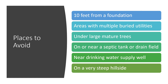Avoid putting a rain garden near a drinking water supply well. If you live in a city hooked up to city water, you don't need to worry about that, but in a rural setting keep those in mind. Lastly, don't put a rain garden in the middle of a steep slope or at the very base of one. There's concern with erosion — depending on how steep the slope is, the velocity of water could potentially wash out the rain garden. A gradual slope is just fine.